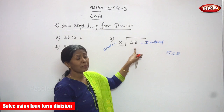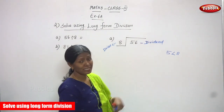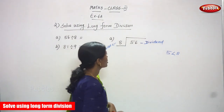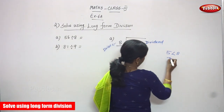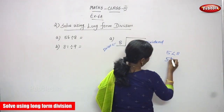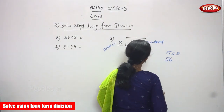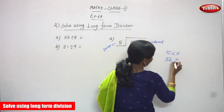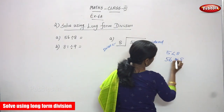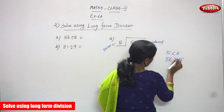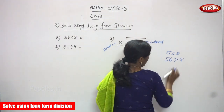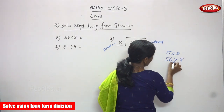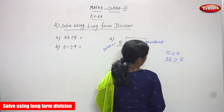Since 5 is not enough, you have to take the next number. That is 6. So you take 56. 56 is greater than 8, so 56 is enough to divide.